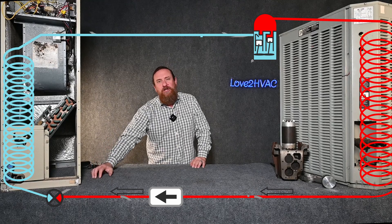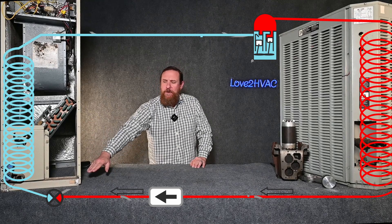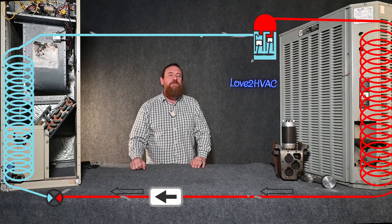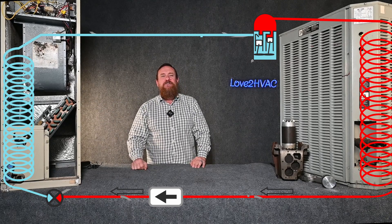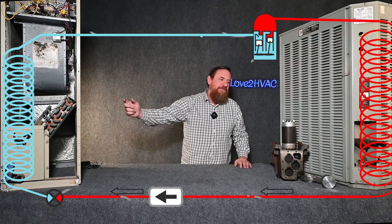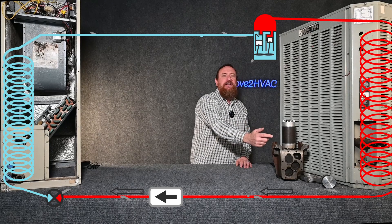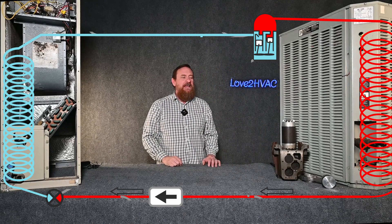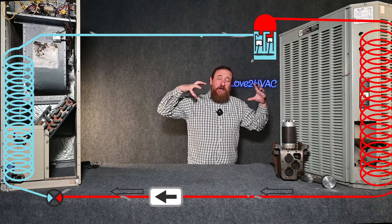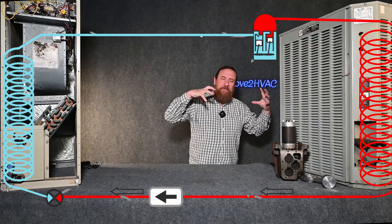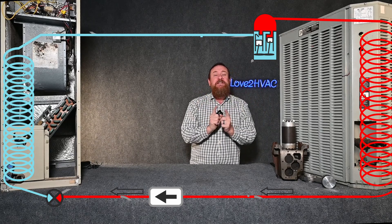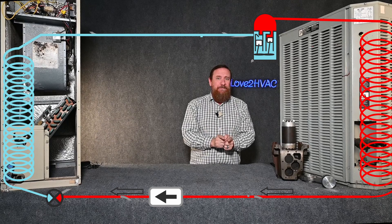Once we boil it all from a liquid to a vapor through most of the evaporator coil, the last little bit, we superheat that refrigerant. Then we have that low-temperature, low-pressure, superheated refrigerant coming back to the compressor, and our cycle starts again. Our compressor's job is to compress that refrigerant — by compressing it, it raises the pressure, but more importantly, raises the temperature.